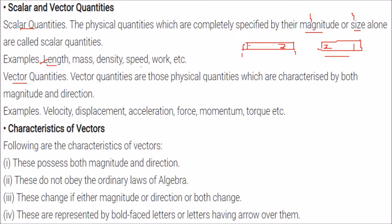Length, mass, density, speed, and work are all scalar quantities. Vector quantities are characterized by both magnitude and direction. Everything has some value with respect to some property, but direction along with magnitude makes it a vector quantity. Examples include velocity, displacement, acceleration, force, momentum, and torque — these are all vector quantities.